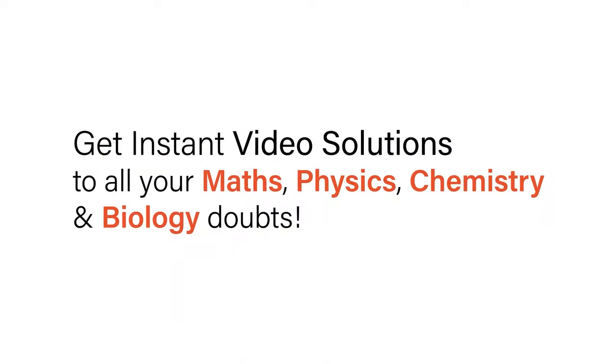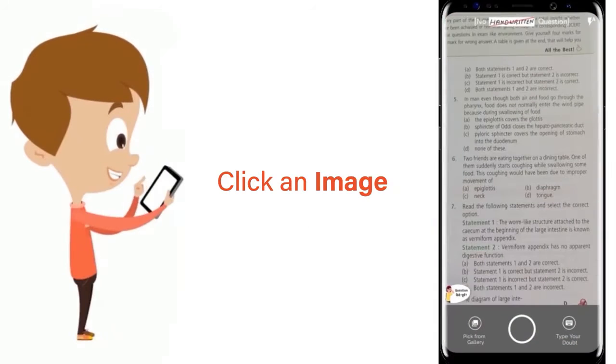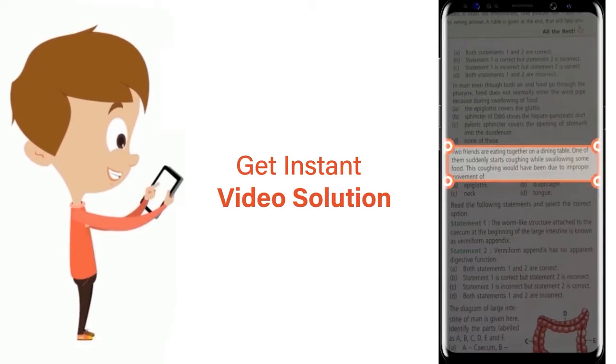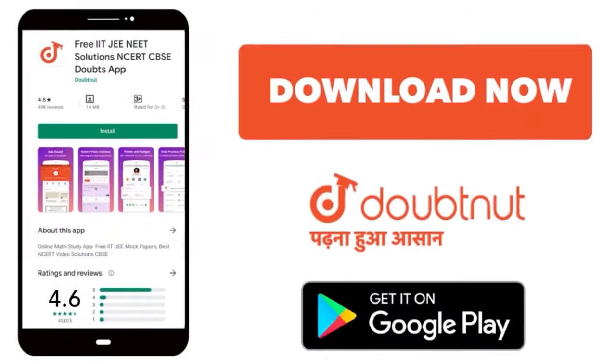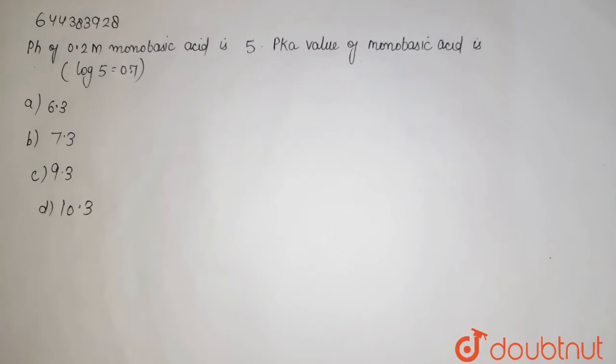With Doubtnet, get instant video solutions to all your maths, physics, chemistry, and biology doubts. Just click the image of the question, crop the question, and get instant video solution. Download Doubtnet app today. pH of 0.2 molar monobasic acid